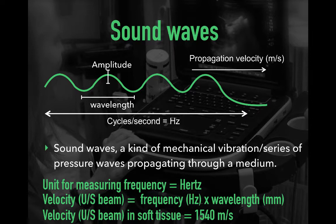The speed or propagation velocity at which an acoustic wave travels through the medium depends on two things: density and resistance. Dense media transmit a mechanical wave faster than less dense media.